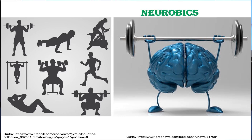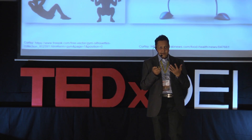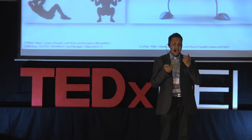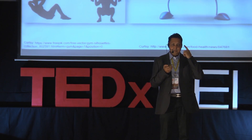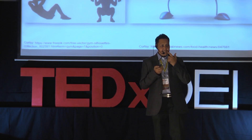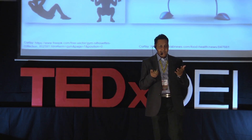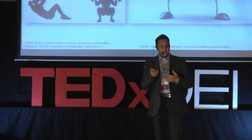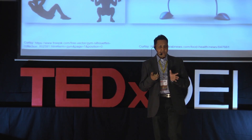Neurobics are non-routine activities done with the involvement of more than one sense together. By nature we are given five senses: olfaction or smell through the nose, sight through the eyes, hearing through the ears, taste through the tongue, and touch through receptors — especially the fingers. If we use more than one sense together with an attentive mind during memory formation, memory consolidation improves significantly.